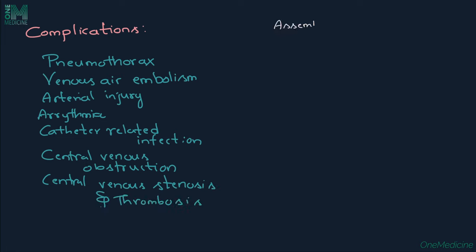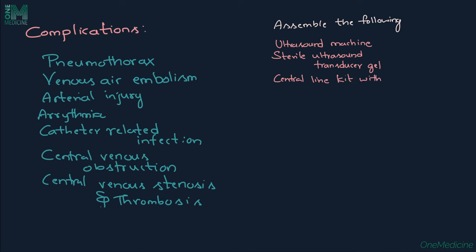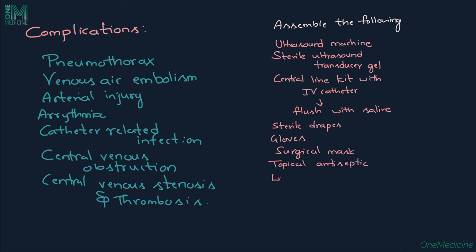Prior to the placement of jugular venous catheters, assemble the following equipment: ultrasound machine, sterile ultrasound transducer gel, central line kit with intravenous catheter. The catheter should be flushed with sterile saline prior to insertion. Also required: sterile drapes, gloves, gown, surgical mask, topical antiseptic (e.g. chlorhexidine or povidone-iodine), local anesthetic, isotonic saline, and heparin.